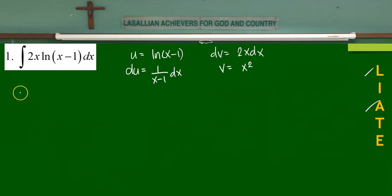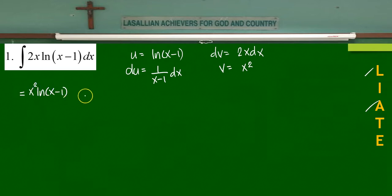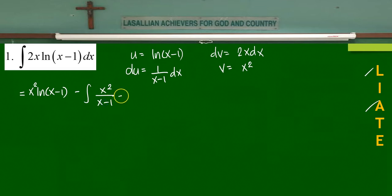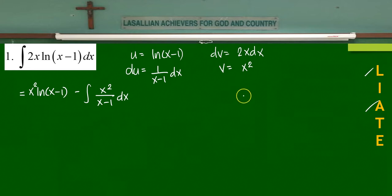Using the formula uv minus the integral of v du: that gives ln(x-1) times x squared minus the integral of x squared over (x-1) dx. Looking at the second term, this can be integrated; however, it is an improper fraction, so we have to use polynomial long division on this.